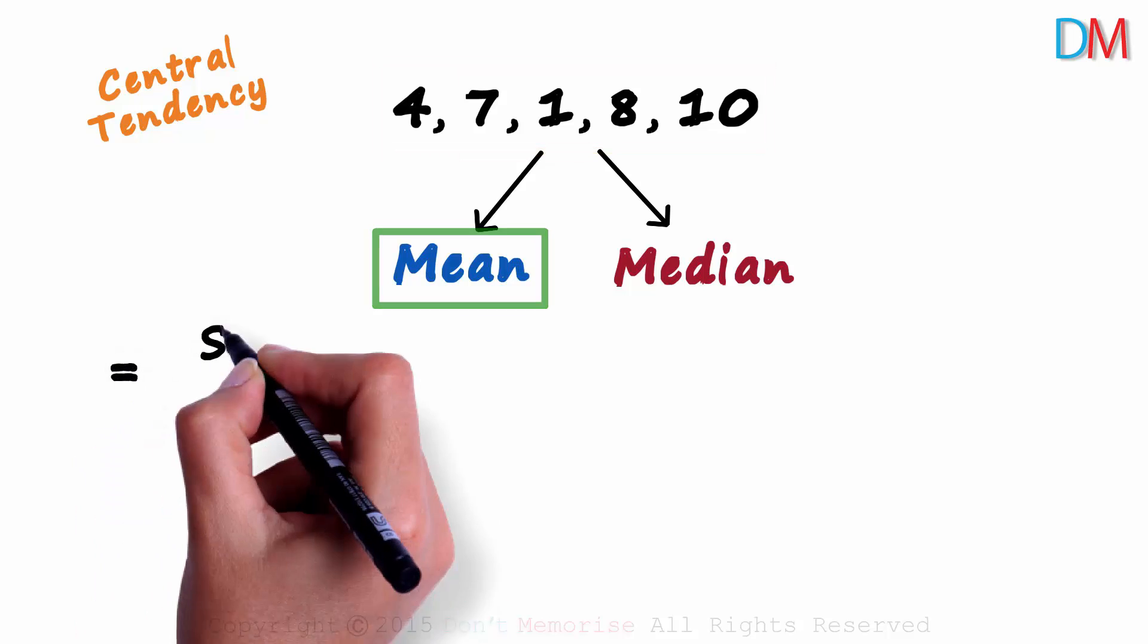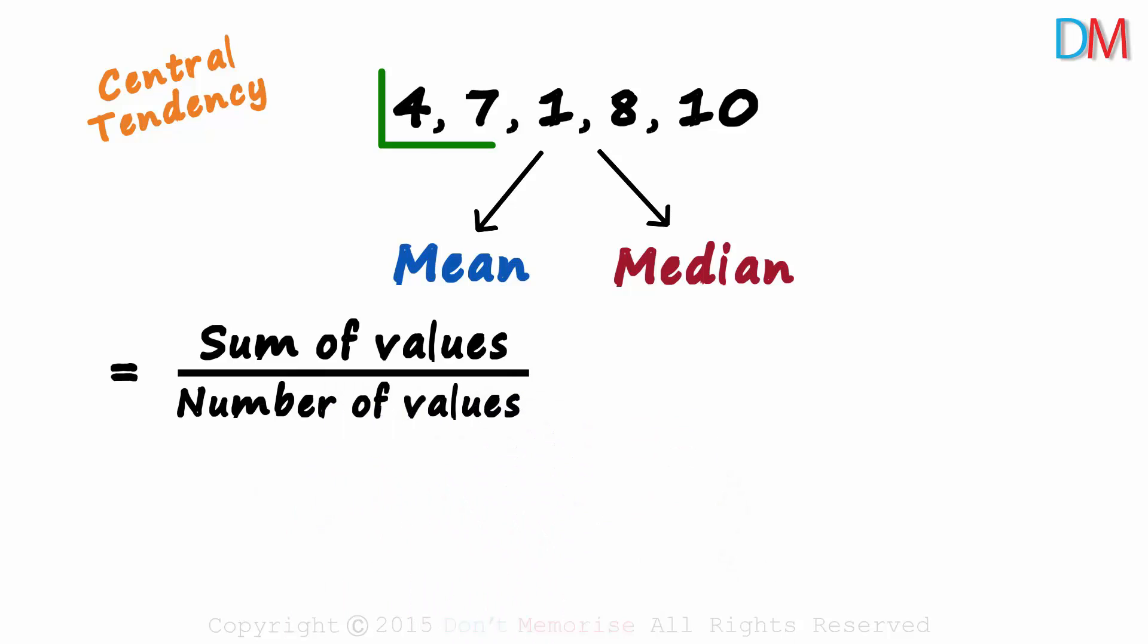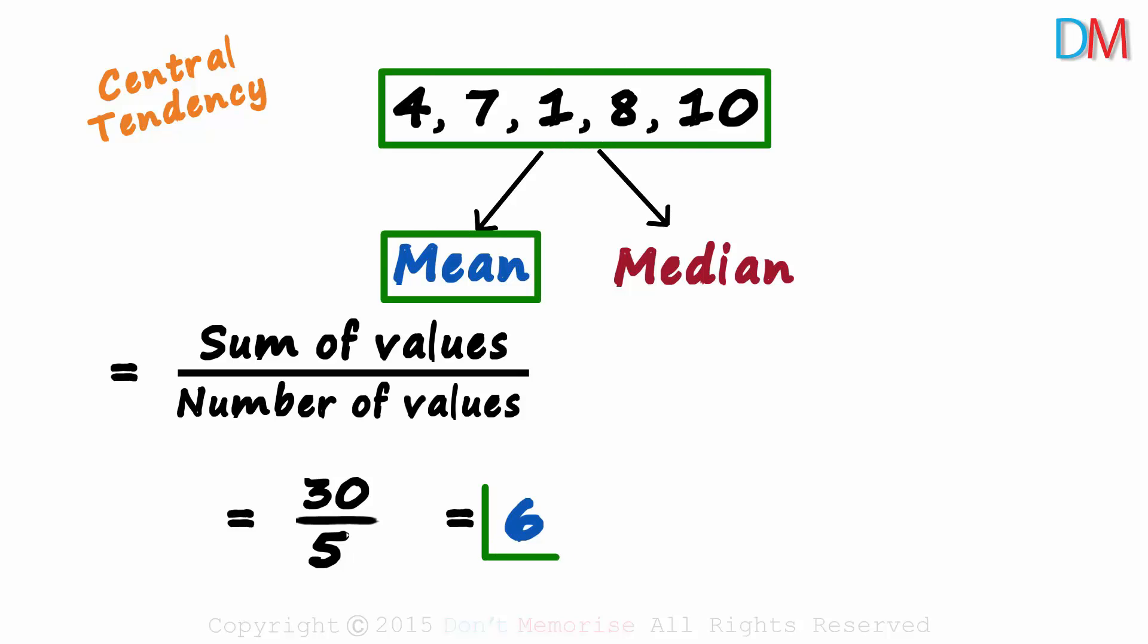We have seen that the mean equals the sum of values divided by the number of values. The sum of these five values divided by the number of values in the set. The sum of these five numbers is 30 and as there are five values, the mean will equal 30 over 5 which equals 6. The mean or the average of this set of numbers is 6.